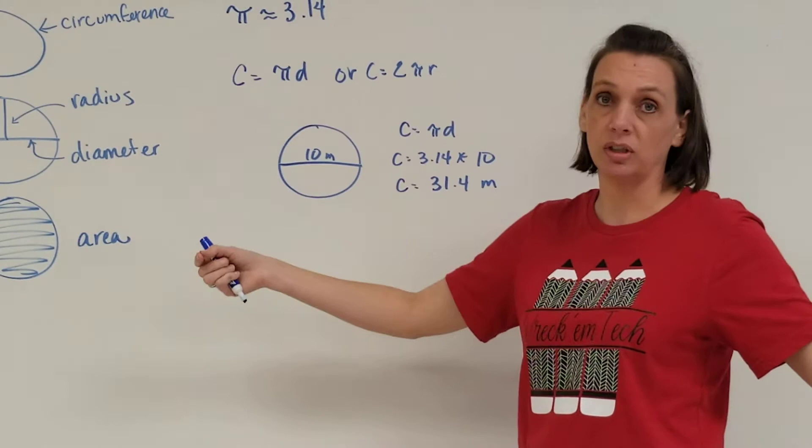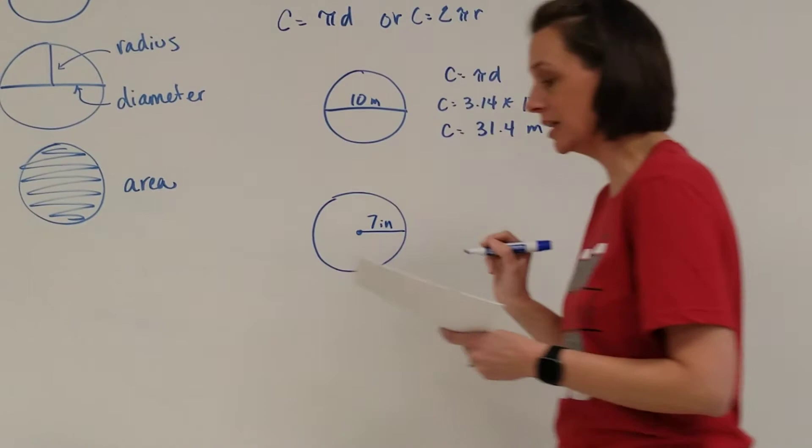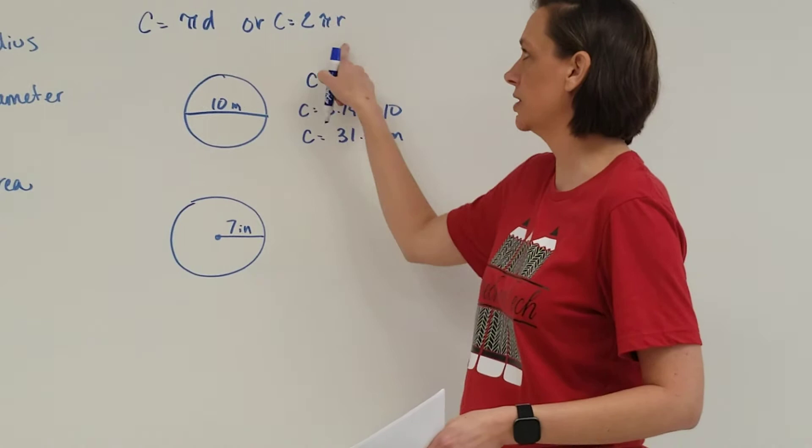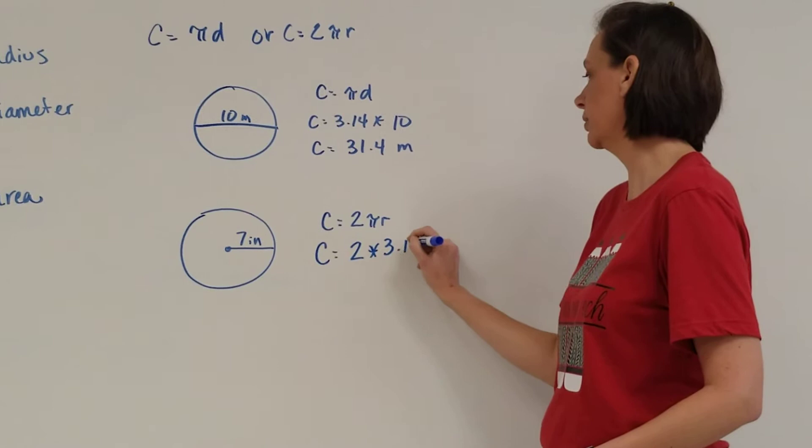So let's do another one. This time it's going to have a radius of seven inches. So this time since it's only radius, let's use this one. The circumference equals 2 pi r. Again, plug in what we know, times 3.14 for pi times the radius, this time of the seven inches.